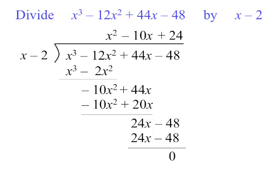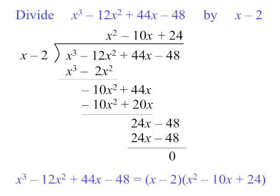And we have finished our long division. So don't forget what that means. We've successfully shown that x cubed minus 12x squared plus 44x take 48 equals x take 2 times by x squared take 10x plus 24.